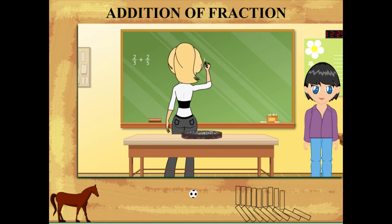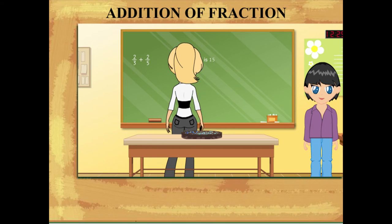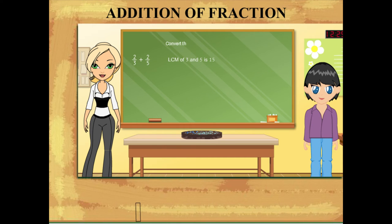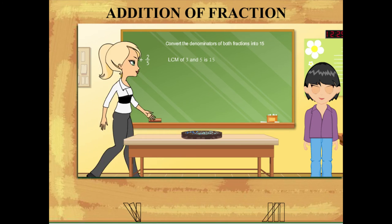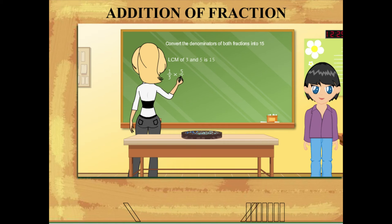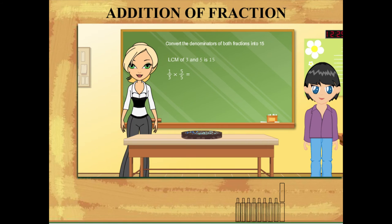The next step is to convert both the denominators to 15 to make the fractions equivalent. Rosie ma'am multiplies one-third by five over five and gets five over fifteen.